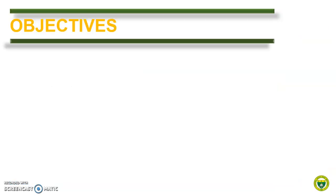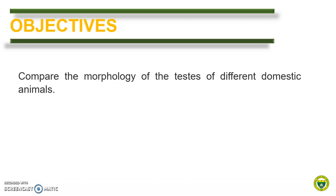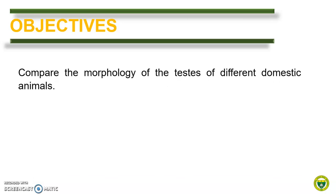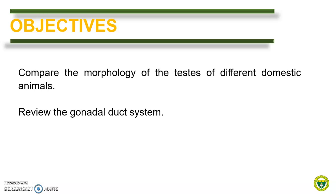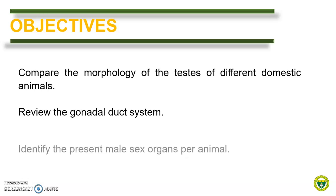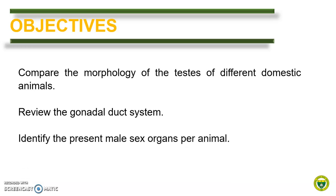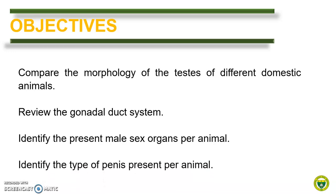At the end of this presentation, each student should be able to compare the morphology of the testis of the different domestic animals, review the gonadal duct system, identify the present male sex organs per animal, and identify the type of penis present per animal.